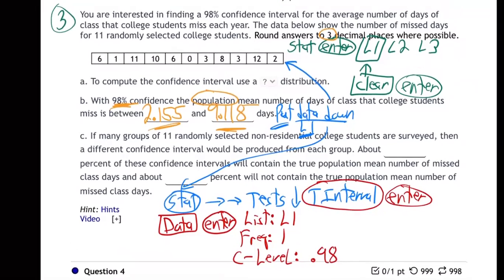Now, the last two questions are going to be just what they were before. Meaning when you come down here and it says, if many groups of 11 randomly selected college students are surveyed and a different confidence will produce, about what percent of the confidence will contain the true thing? Well, we just did a 98% confidence. So that means 98% of the time you'll contain the true average and 2% of the time you will not contain the true average. They're just making sure you understand that there's not a 100% sureness. Maybe the true average is 10, and it's not really between 2.1 and 9.1. But we're 98% sure that the real average is between 2.1 and 9.1. 98% of the time that you do this kind of survey, you're going to capture the real average. 2% of the time you won't.